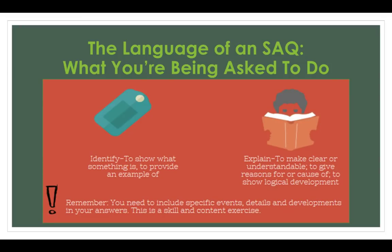So what does that mean? To identify, you show something — you give an example, but then you have to explain it. You need to make it clear that you understand the question by providing evidence. You need to include specific events, details, and developments in your answers to prove that you fully understand. This is a skill and a content exercise.